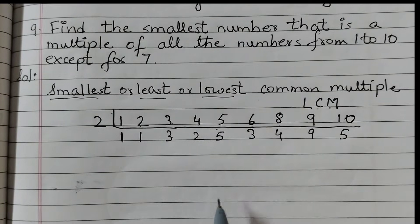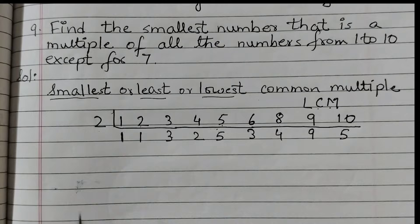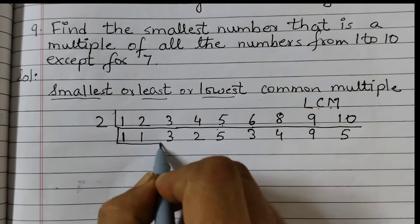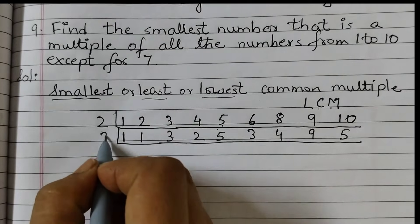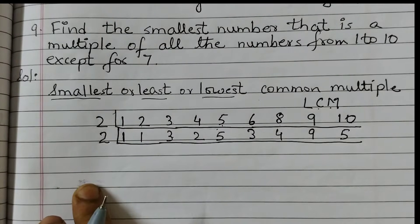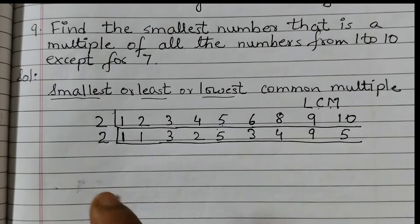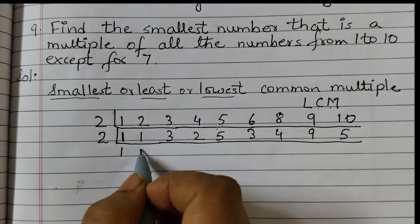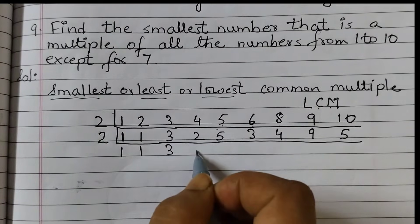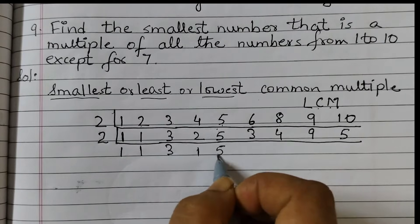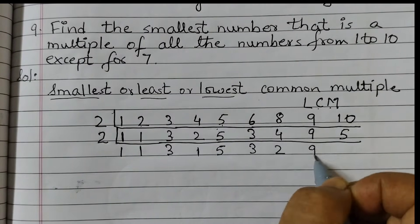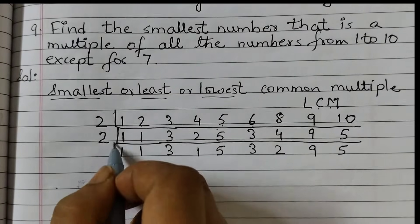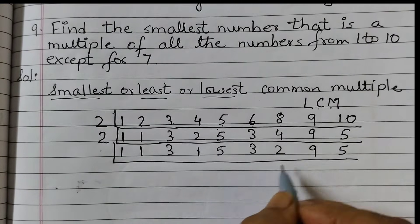So next, again draw a line like this, again divide by 2, and we will continue this till we have no multiples of 2. So 1 comes down as it is, 1, 3. 2 ones are 2. 5 not divisible. 3: 2 twos are 4. 9, 5. There is 1 more 2 here.